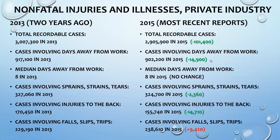Cases involving days away from work — people who the day after getting hurt have to stay home and recover — have gone down by almost 15,000 cases. The median days away from work is still about eight calendar days, including weekends. Cases involving sprains and strains, where overexertion is the number one cause, have gone down slightly. Injuries to the back have gone down more than sprains and strains overall. Cases involving slips, trips, and falls actually went up from 2013 — out of all non-fatals, slips, trips, and falls is the only one that's really gone up. Probably something that could be on a quiz — hint, hint.